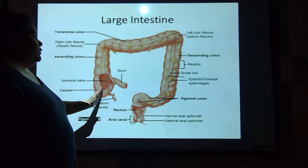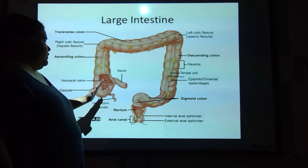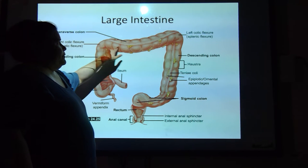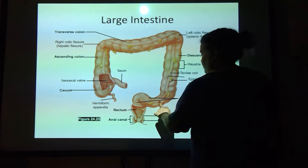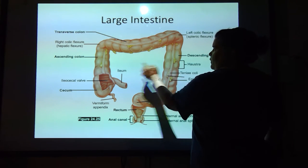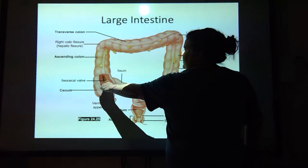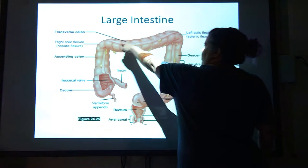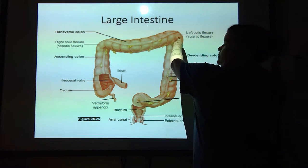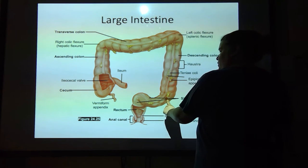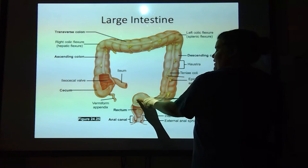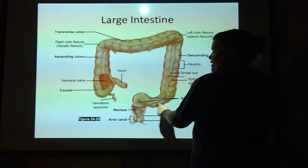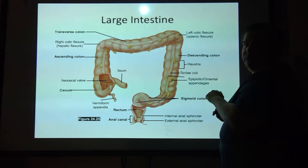We've got the colon. From the cecum, the colon goes up, sideways, down, kind of does a little squiggle. This is the ascending colon, transverse colon — remember transverse means across — descending colon, and then if you turn this around, this makes kind of an S shape. This is the sigmoid colon.